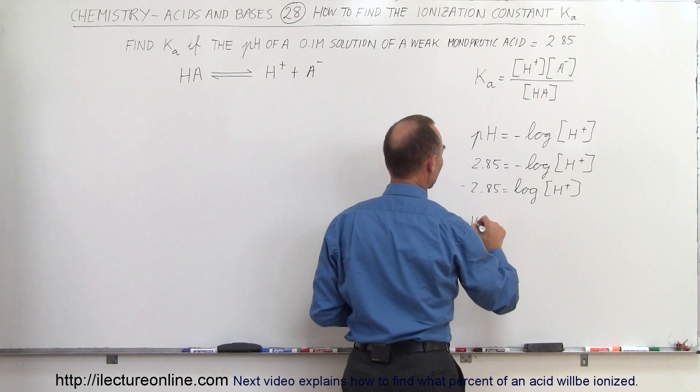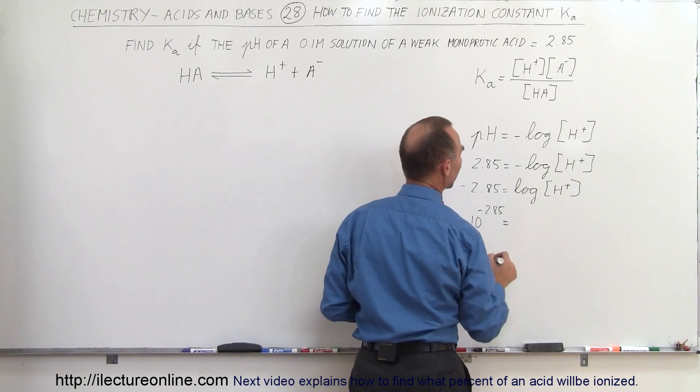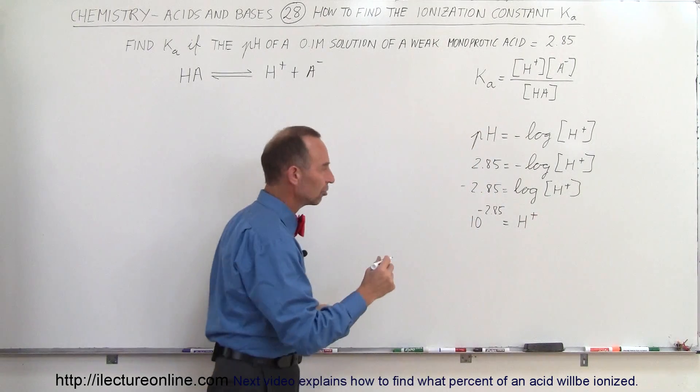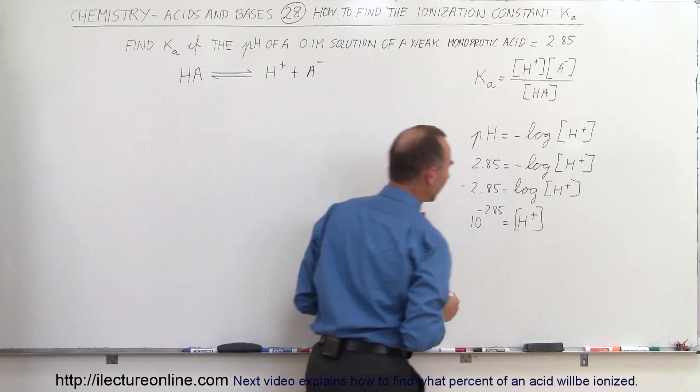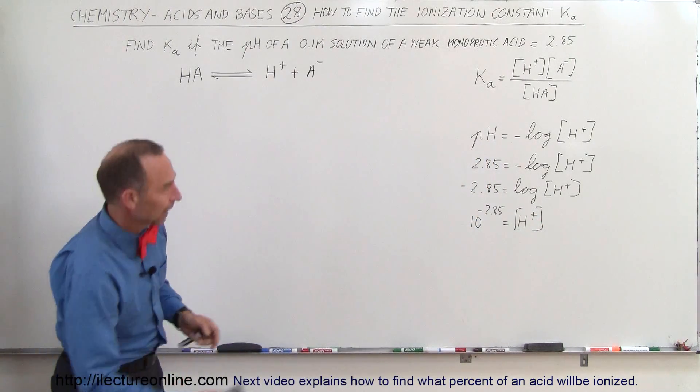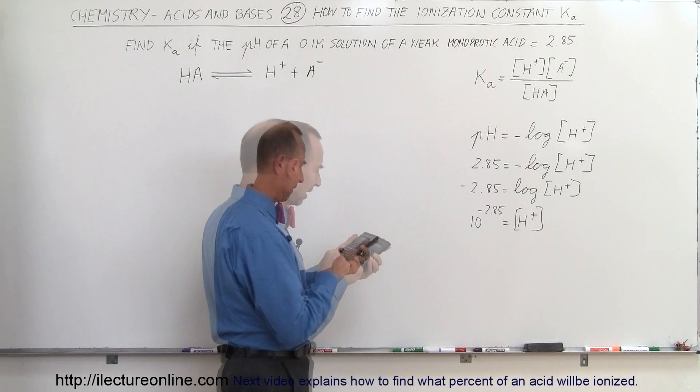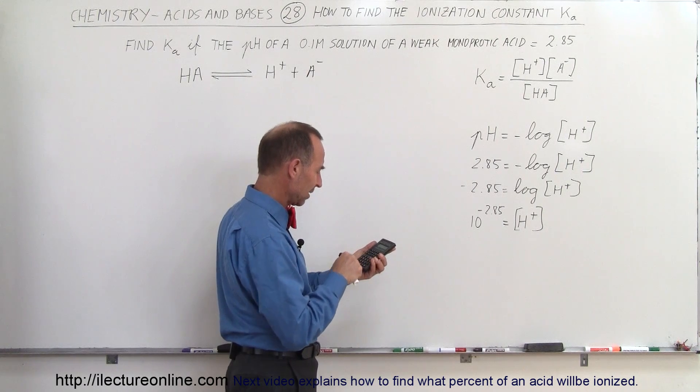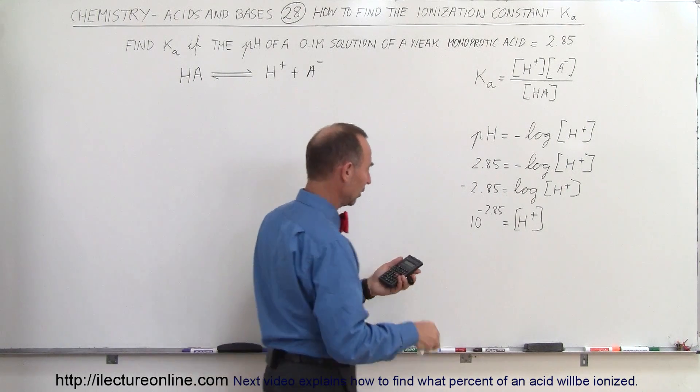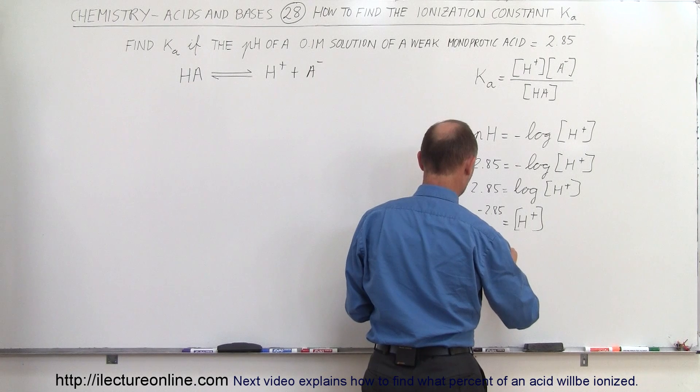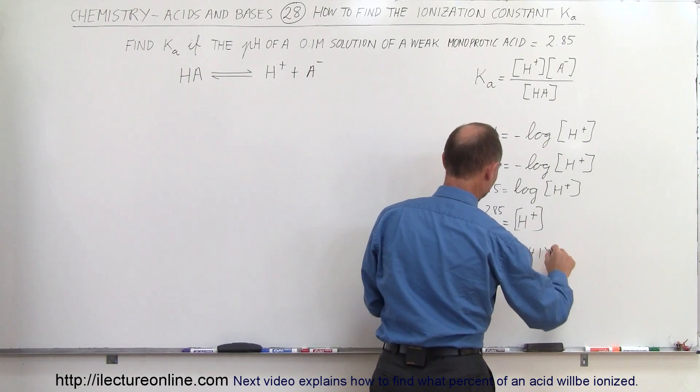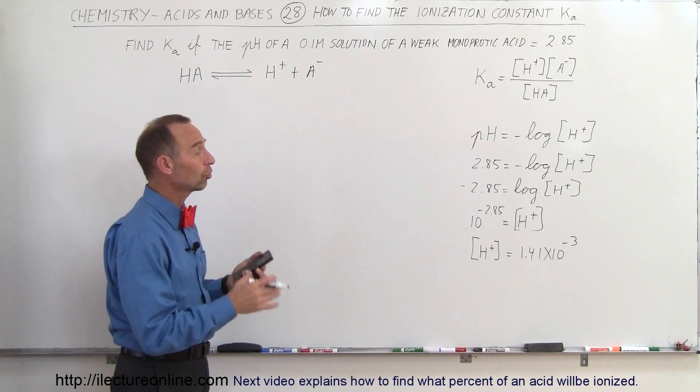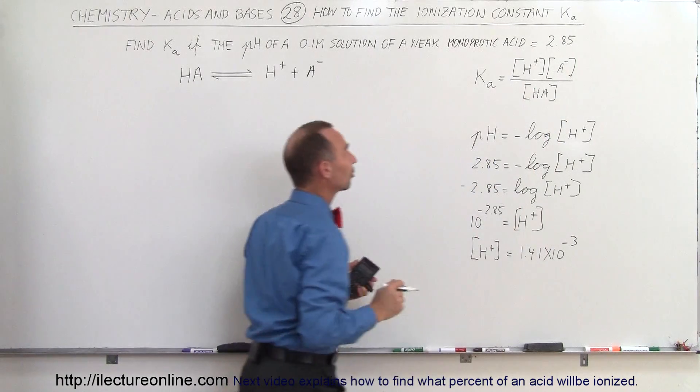And so by taking the anti-log, we can then say that 10 to the minus 2.85 is equal to the concentration of the hydrogen ion. And so how do we turn that into a number? 10 raised to the minus 2.85 equals, and there we go. So that would be equal to 1.41 times 10 to the minus 3. So that is the molar concentration of the hydrogen ion, which is also the molar concentration of the conjugate base.